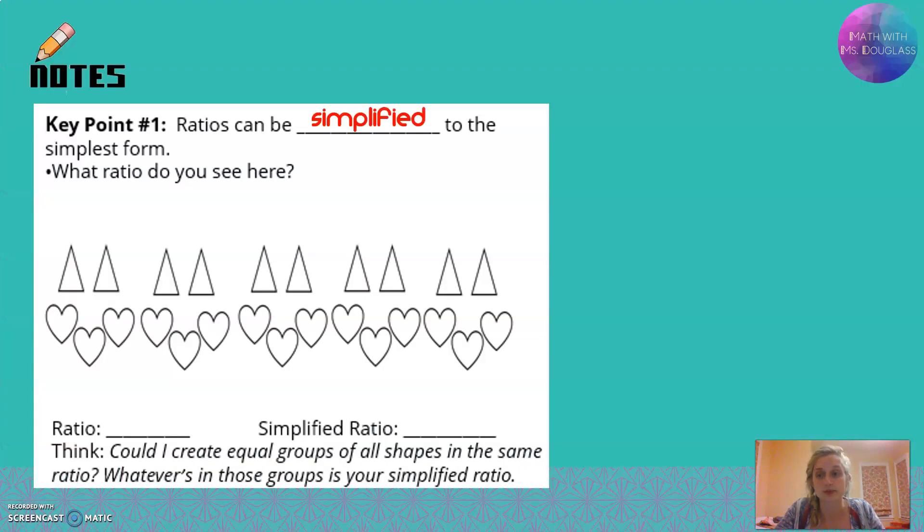Ratios can be simplified to their simplest form. So we see a ratio here. It's got a bunch of triangles, a bunch of hearts. If we counted them all up, we can see there's 1, 2, 3, 4, 5, 6, 7, 8, 9, 10 triangles.